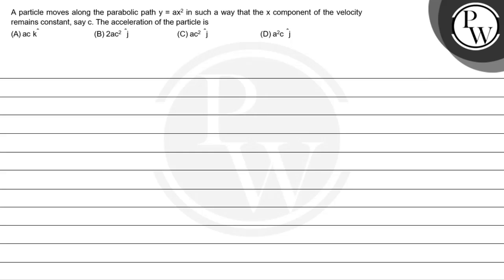Hello watcher, let's read out the question first. A particle moves along the parabolic path y equals x square in such a way that the x component of velocity remains constant. The acceleration of the particle is...